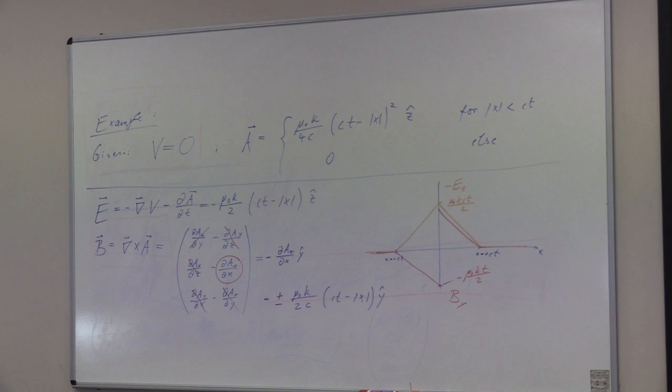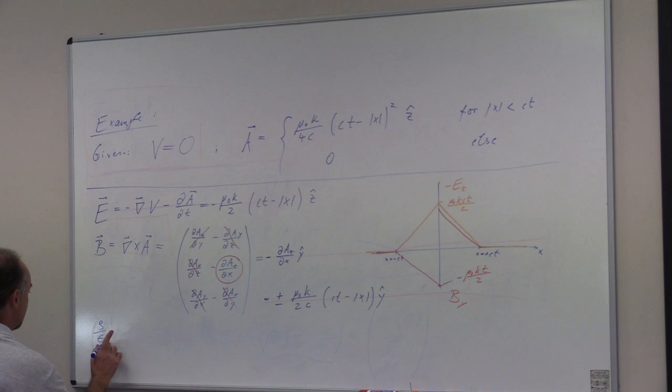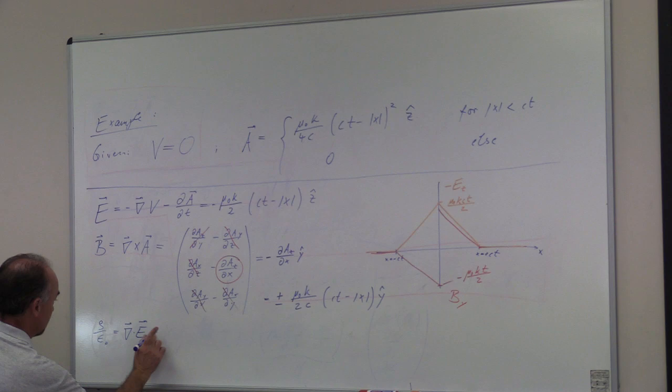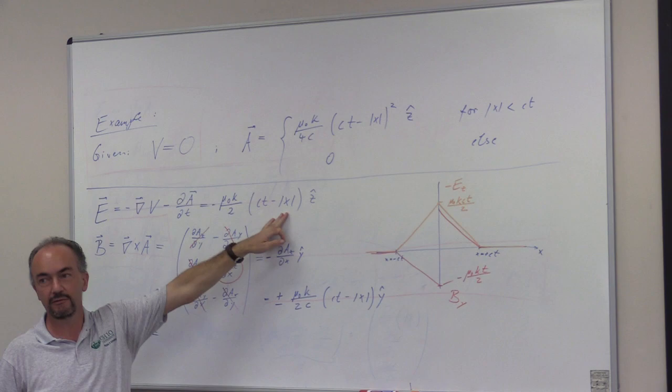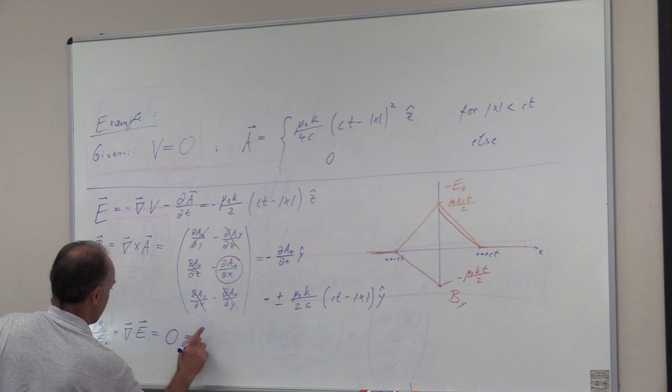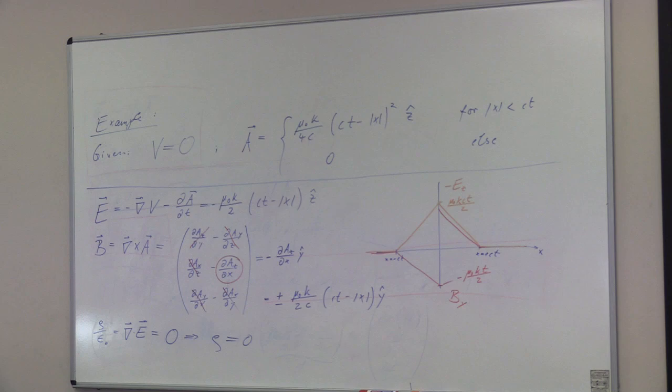Now let's see if we can relate this to the charges. Because of course we have rho over epsilon naught as the divergence of E. And this is dE_x over dx. There is only a z-component, dE_z over dz. So that is zero. So that means we have no charges, we have no free charges.